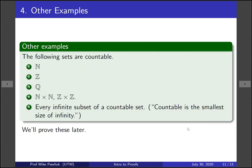Here's some other examples of countable sets. The naturals, the integers, the rationals, N cross N, or Z cross Z, and every infinite subset of a countable set. So what this tells us is that countable is the smallest size of infinity. That's a little bit of a weird statement, but it's true.